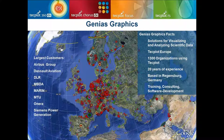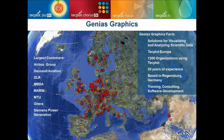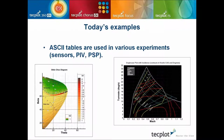Genius Graphics provides solutions to visualize and analyze scientific data. We are a Techplot distributor in Europe, with approximately 1,300 organizations using Techplot in Europe. We have more than 20 years of experience and are based in South East Germany, in Regensburg. We do training, consulting, as well as software development. Our biggest customers are from the aerospace domain, such as Airbus Group, Dassault Aviation, or DLR.